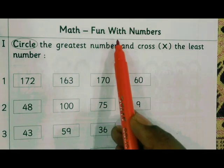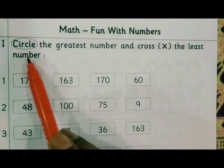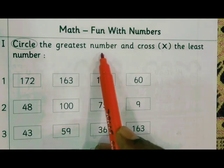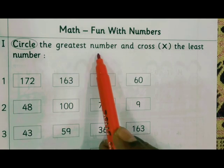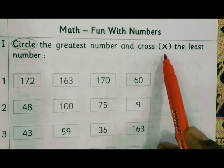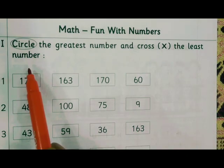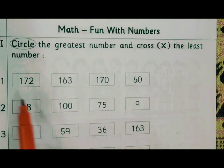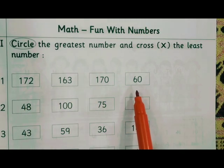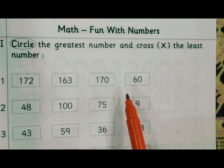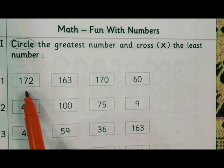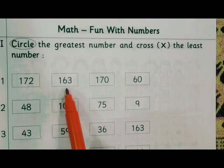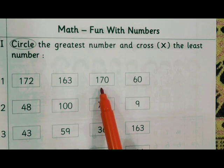Math fun with numbers. Circle the greatest number—greatest means big number—and cross the least number—least means small number. Read the numbers, understand them, and do the activity. 172, 163, 170, 16.